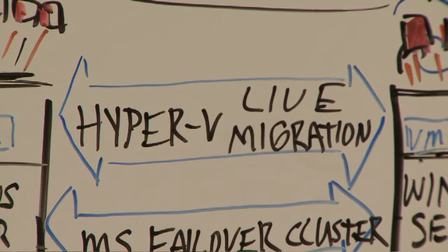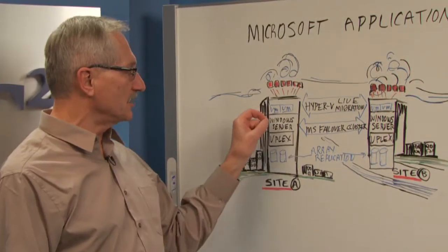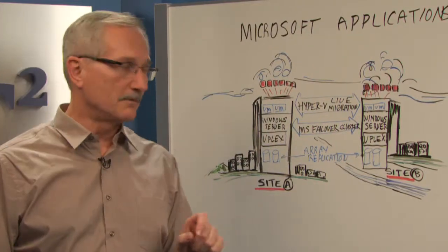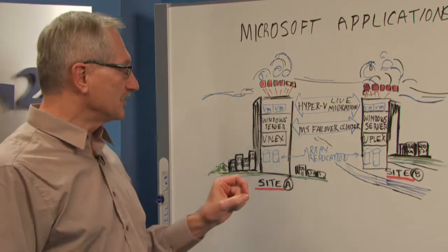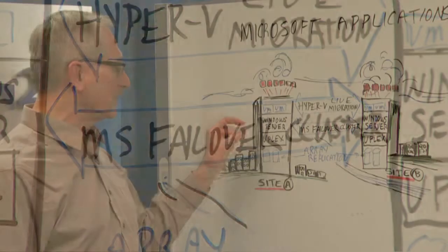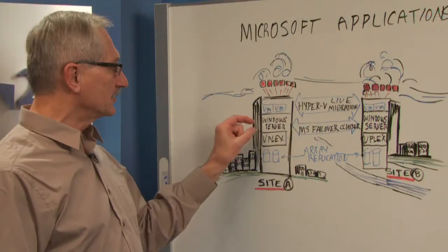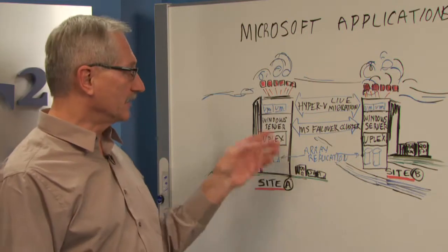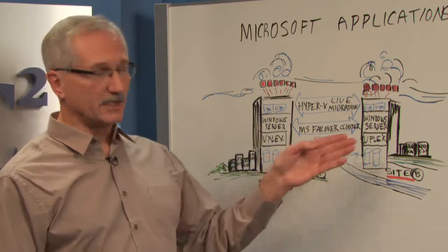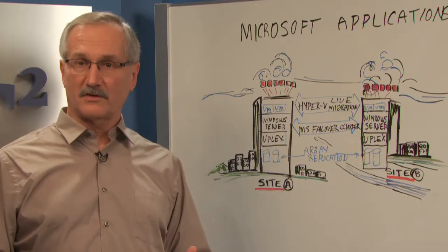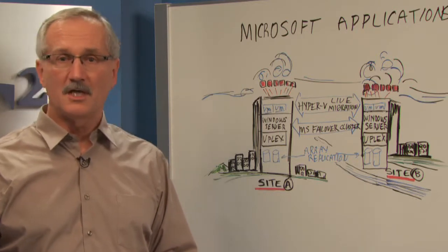One is called Hyper-V Live Migration. Live Migration allows you to take a virtual machine from one place and move it to another place and have it restart and run. There's also something called Microsoft Failover Cluster. What this does is if one of these servers were to fail, it allows the application to restart on another server, either on this site or on another site. These tools can work very well to give you high availability in case of certain failure modes.